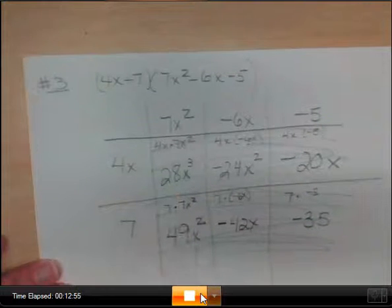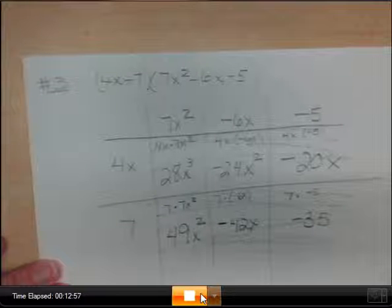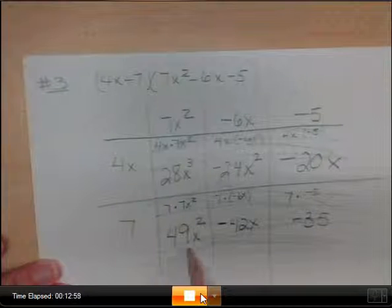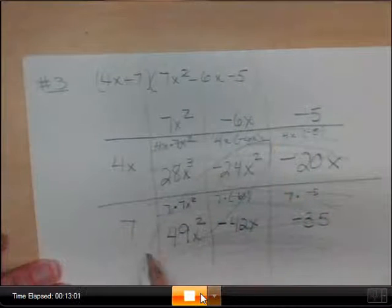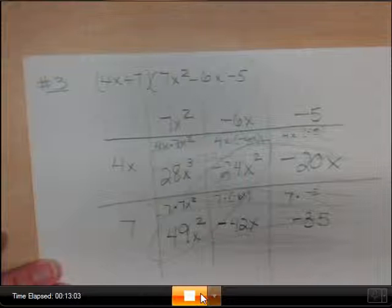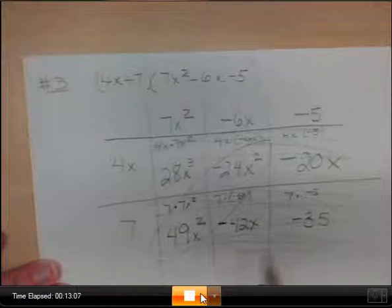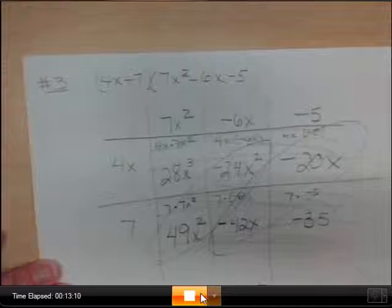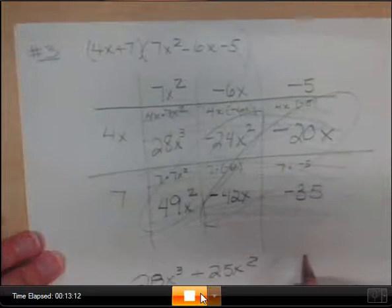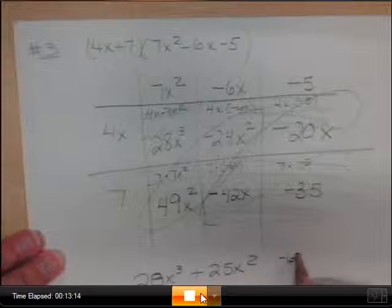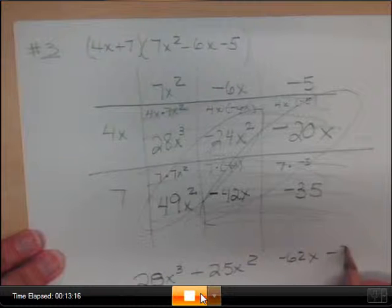So now we look at these six boxes. Who can you put together? Well, 28x³ alone. Right? There's nothing you can put together. You can put 49x² and negative 24x²? Giving you 25x². Is that what you said? Okay. And these two can go together. Giving you negative 62x minus 35.